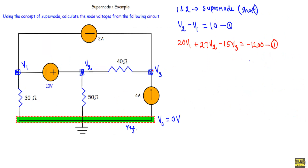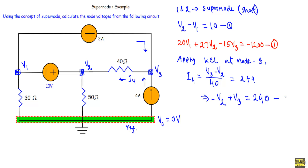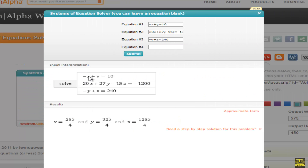After that I will apply KCL at node number three. The 2-ampere and 4-ampere sources are incoming. The current flowing through the 40-ohm resistor is unknown — let's call it I4, flowing from node three to node two. So I4 = (V3 minus V2)/40. Setting outgoing current equal to sum of incoming currents: (V3 minus V2)/40 = 2 + 4, which gives minus V2 + V3 = 240. This will be our equation number three.